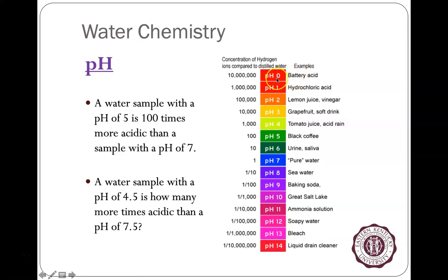Battery acid is nearly pure H — extremely acidic, almost no free hydroxyl. Drain cleaner has a lot of hydroxyl and very little free hydrogen. Lemon juice, grapefruit, and Mountain Dew are in the acidic range; coffee is slightly acidic. Pure water is pH 7, seawater is 8, baking soda is 9. People can generally drink fluids in the range of about pH 2.5–3 up to 8.5–9, like alkaline waters.